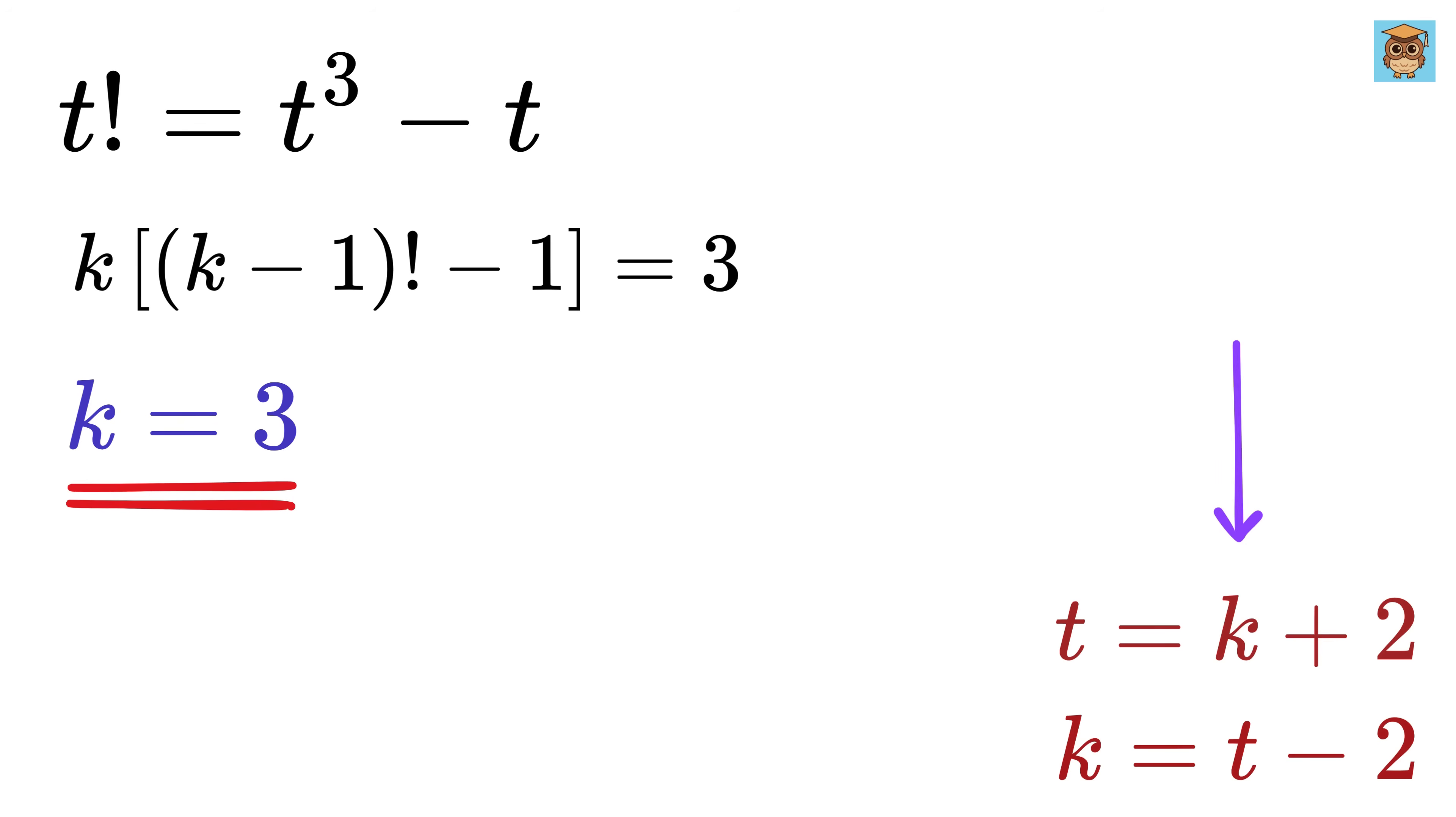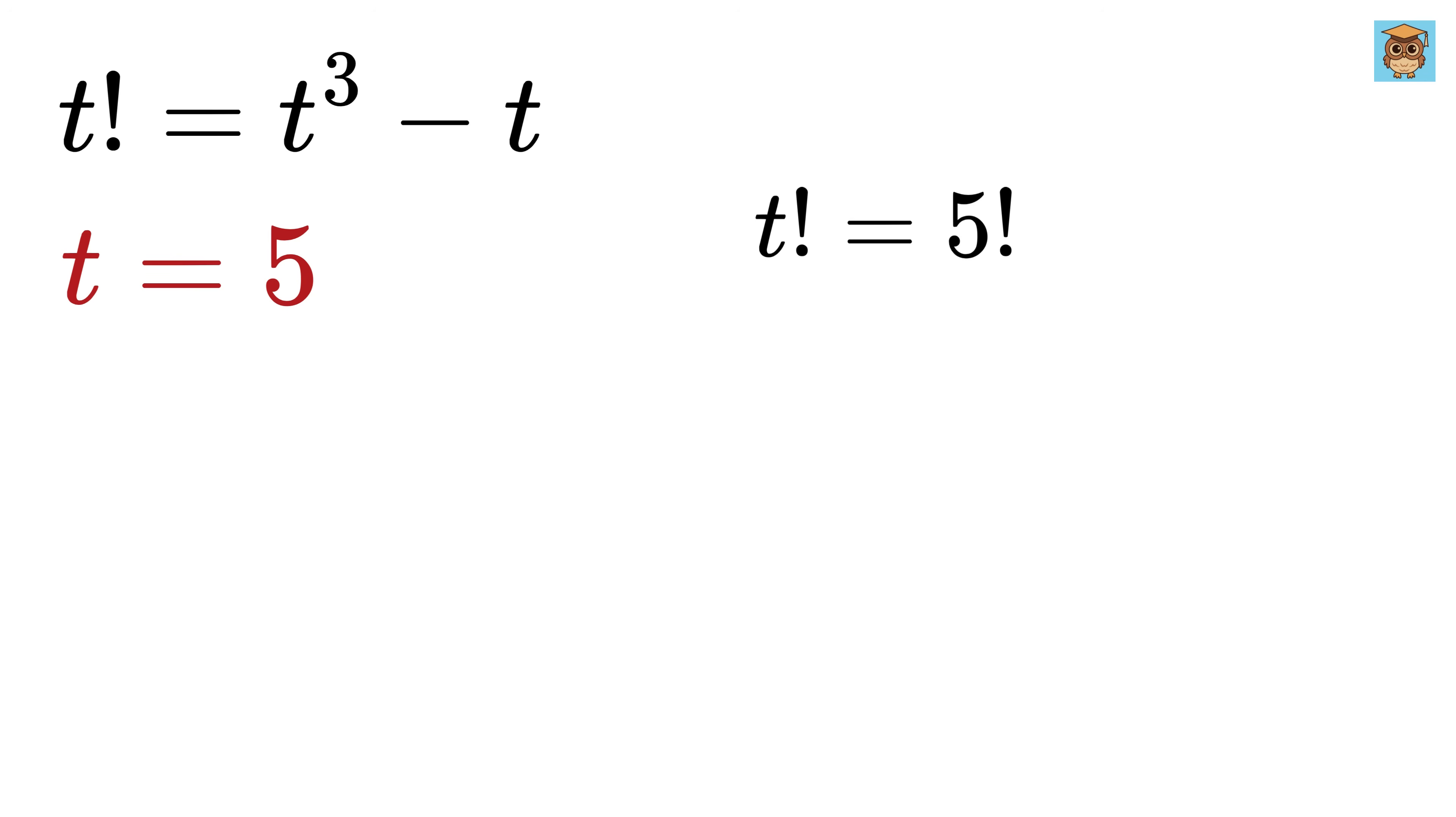This means t equals k plus 2 or 3 plus 2, which is 5. And that's it. This is the only possible solution for t. Let us verify the same. t factorial equals 5 factorial, which is 120. And for the right-hand side, t cube minus t equals 5 cube minus 5, or 125 minus 5, which is 120. And there we go! So good!